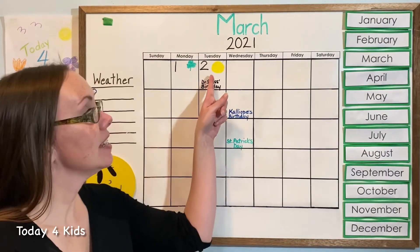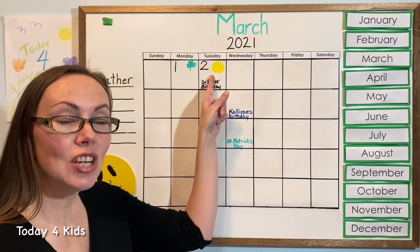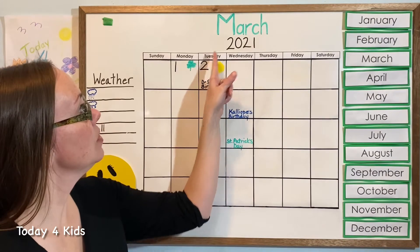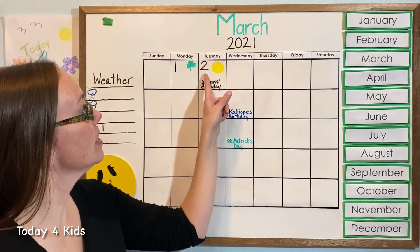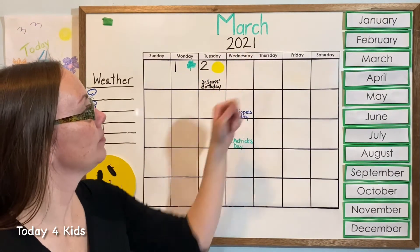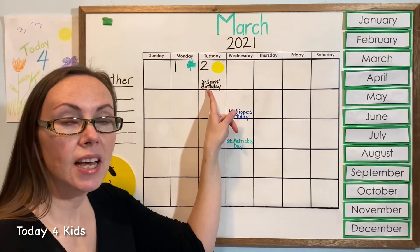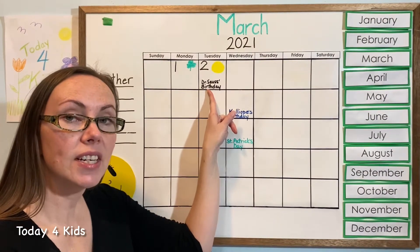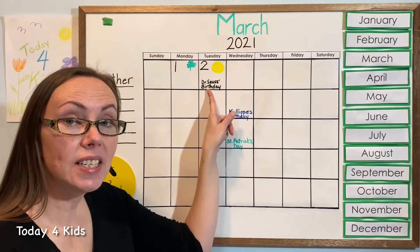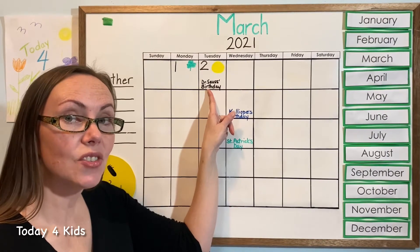Did you guess a yellow circle? Yellow circle was the last shape we drew in our pattern. So yesterday was Tuesday, March 2nd, 2021, and it was also Dr. Seuss's birthday. Lots of schools and parents and daycares did a national read day, so lots of people were doing lots of reading yesterday.